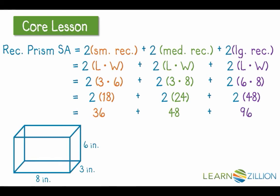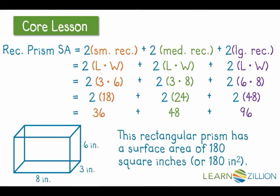Simply add up those values, and I learned that this rectangular prism has a surface area of 180 square inches.